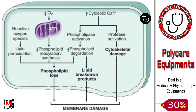When cell injury occurs, calcium levels increase. When calcium levels increase, phospholipases are activated, and phospholipids are degraded. The lipid breakdown products accumulate in the membrane and damage it. Additionally, when calcium increases, it activates proteases which damage the cytoskeletal proteins, further damaging the membrane.